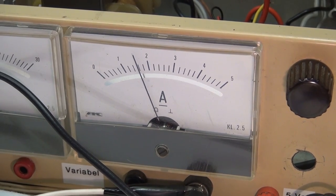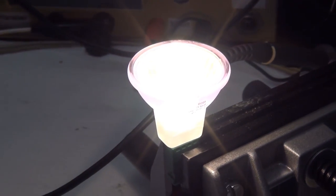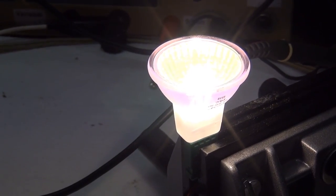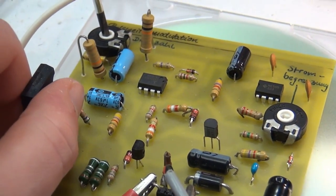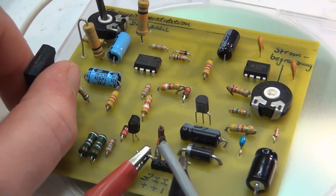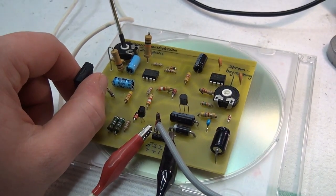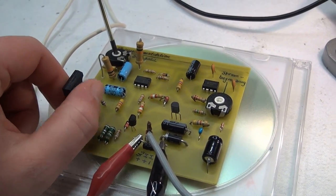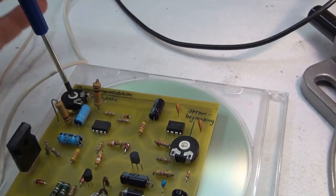Now, somewhere around here this overcurrent protection should cut it out, but there it is. Nice and bright. And the MOSFET does get a little warm, but surprisingly it's, I don't think it's going to need a heat sink. It seems to be able to run this without problems.